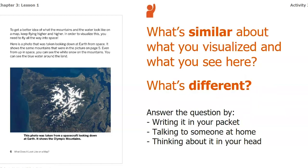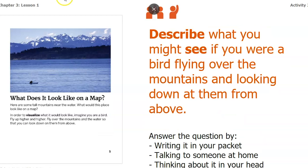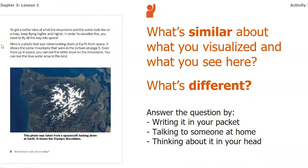Take a second to think about what is similar about what you visualized and what you see here, and also what is different. Pause the video and answer using one of those methods. I thought the water would still look blue, because it was blue in the page five picture. I also expected some white because of the snow on top of the mountains. Something different is that you can't really see the mountain peaks at all — the only way you know they're mountains is from the snow. I thought the mountains would look more jagged from the bird's eye view than they actually do.